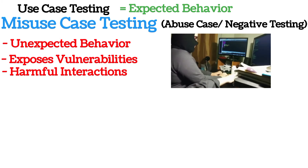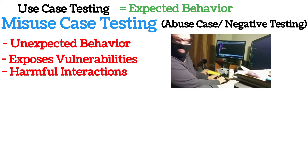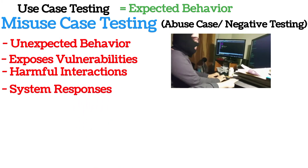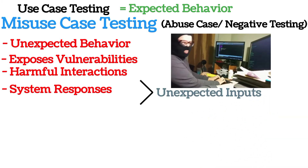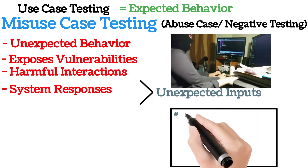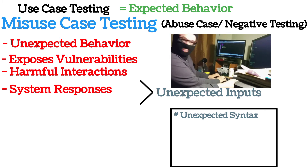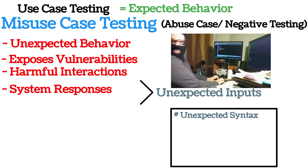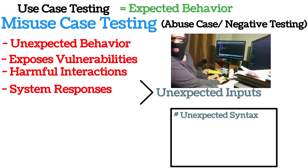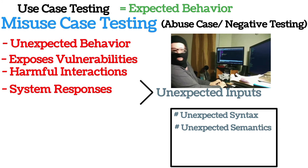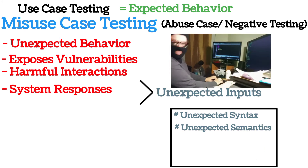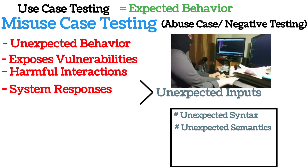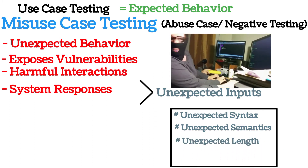For example, when a system is not used as expected — abused by an attacker or accidentally by a legitimate user — the system or application responses and behavior are assessed by providing different unexpected inputs. This includes inputs with unexpected format or syntax, such as using special characters instead of alphabets in a field designed to accept alphabets, or inputting unexpected semantics — for example, '555' is syntactically correct but semantically an invalid area code.